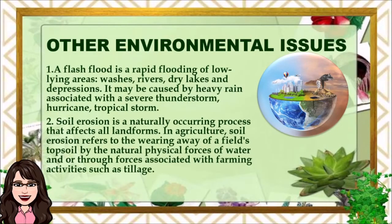Other environmental issues: First, flash floods — a rapid flooding of low-lying areas, washes, rivers, dry lakes, and depressions. Flash floods are now experienced in many places. A flash flood may be caused by heavy rain associated with a severe thunderstorm, hurricane, or tropical storm.